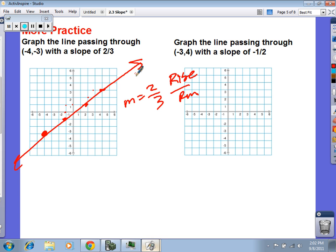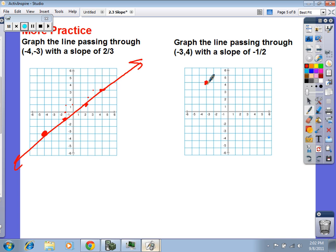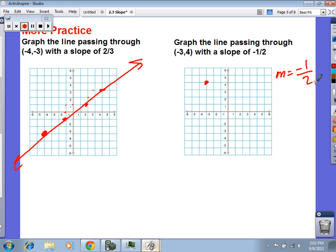Do three. Do at least three. Let's do this guy right here. Negative three, four. Slope of a negative one half. Let's try a negative one half. So where's our first dot? Negative three, four. Now M is a negative one half. So you're going to go from this dot, down one, right two. Down because negative. Down one, right two. Got it, Manny? Easy, right?